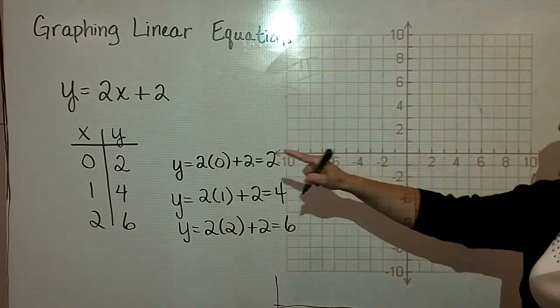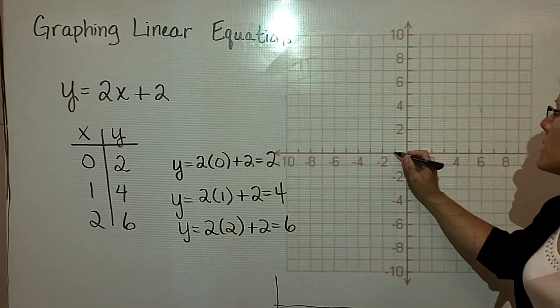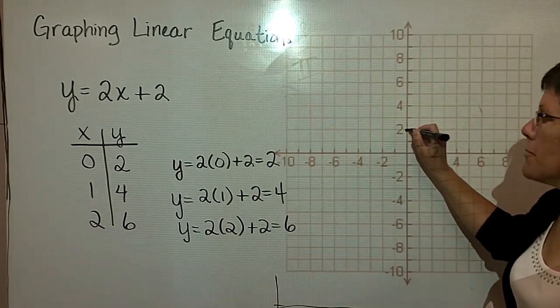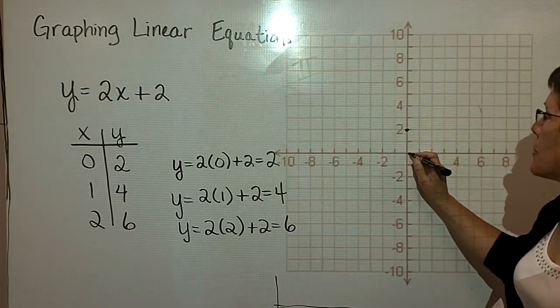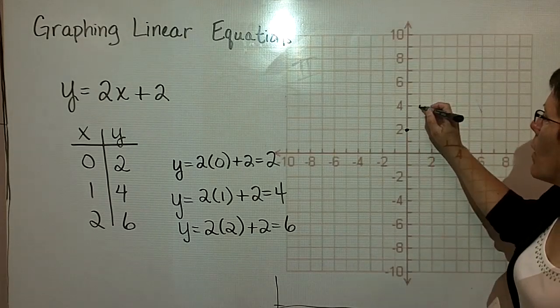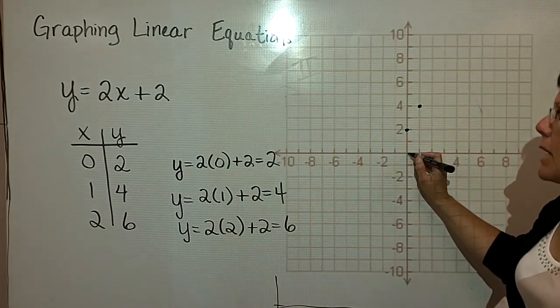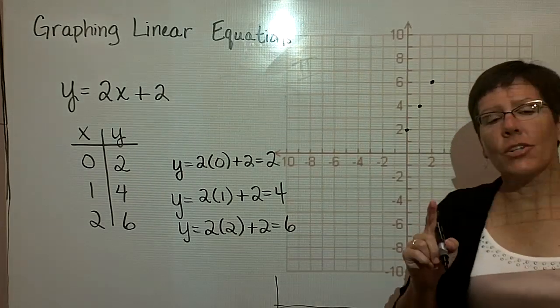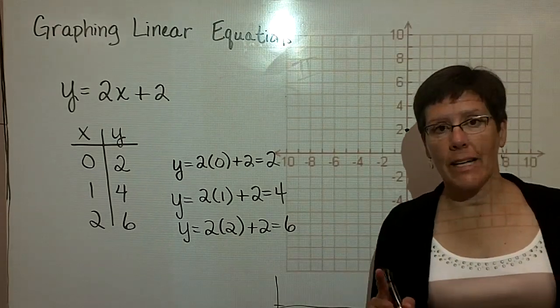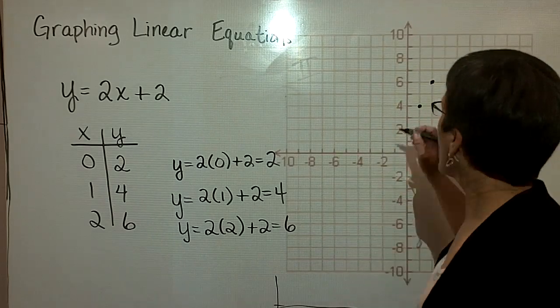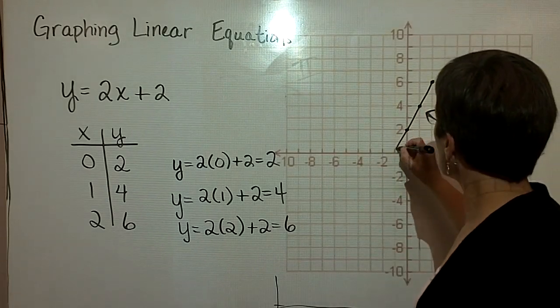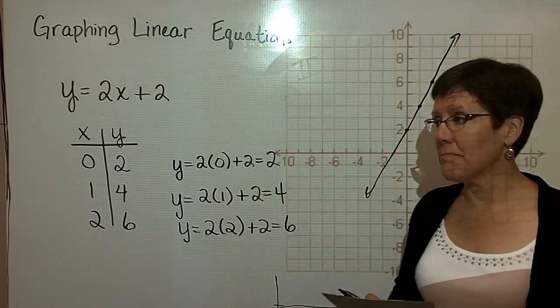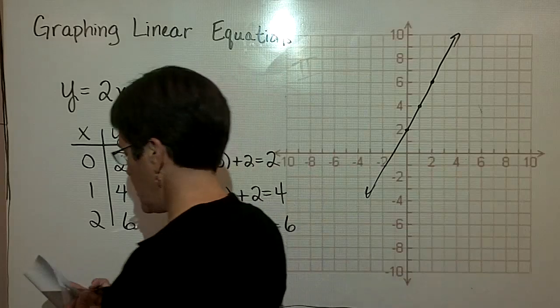The first ordered pair when x is 0 means I don't go anywhere. I stay put right here in the x direction, but I go up a positive 2 for y. The next ordered pair when x is 1, y is 4. And the next ordered pair when x is 2, y is 6. You're looking to see that these ordered pairs line up in a straight line. And then if you could just connect those values and put an arrowhead on either end, you're done graphing that equation.